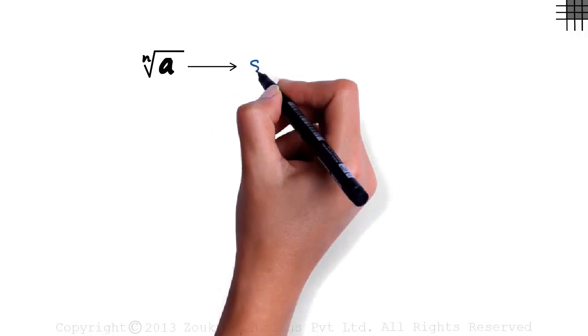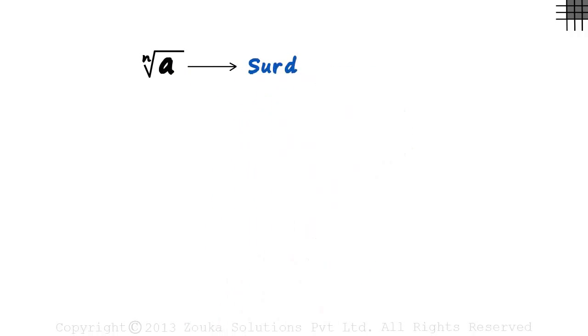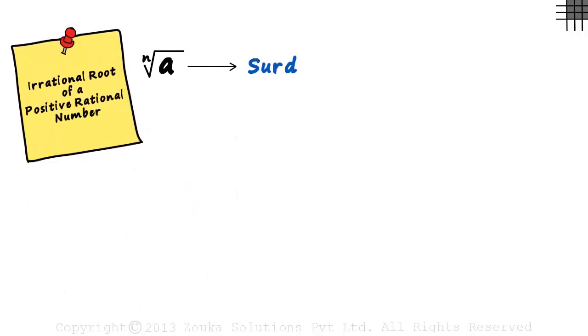Consider the nth root of a. When would it be a SIRD? In the previous video, we saw that a SIRD is an irrational root of a positive rational number. It means a should be a positive rational number and the result should be irrational.